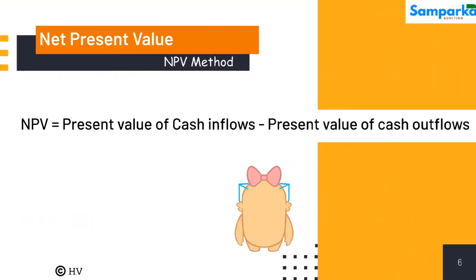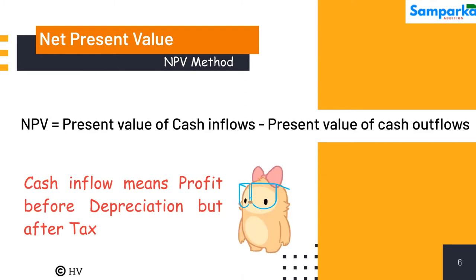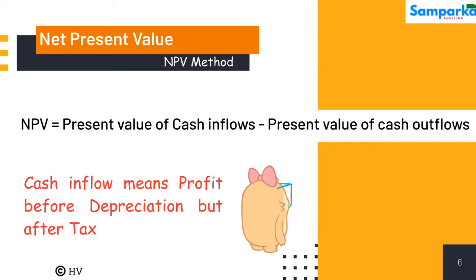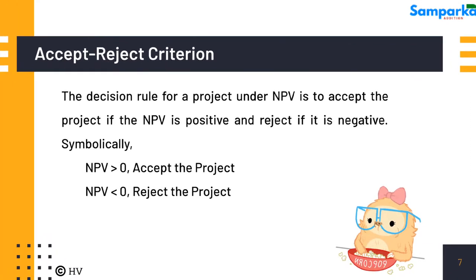NPV is equal to the present value of cash inflows minus the present value of cash outflows. The decision rule for a project under NPV is to accept the project if the NPV is positive, and reject it if it is negative. Symbolically: NPV greater than 0 — accept the project; NPV less than 0 — reject the project.